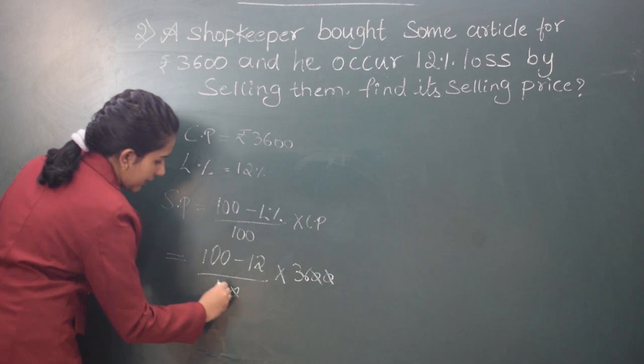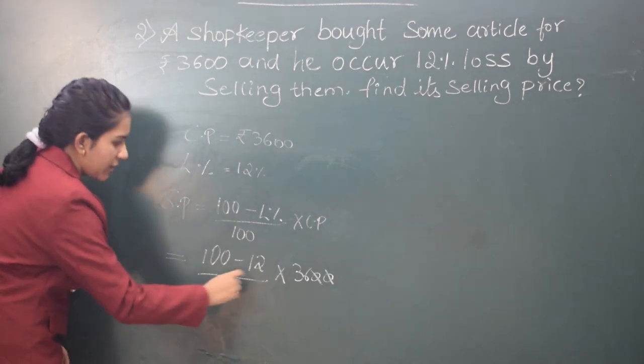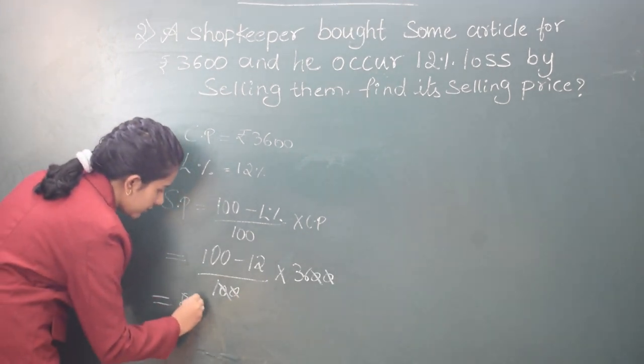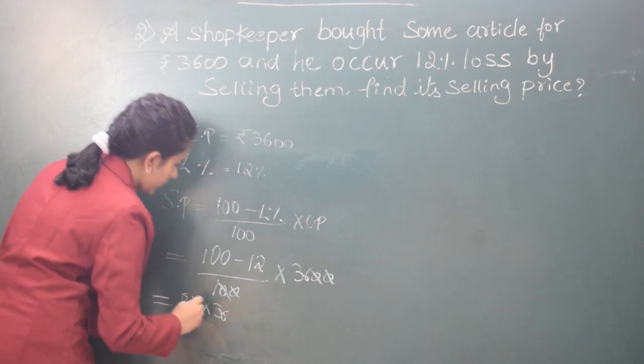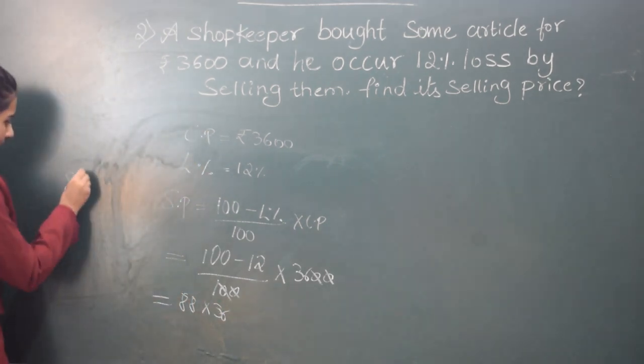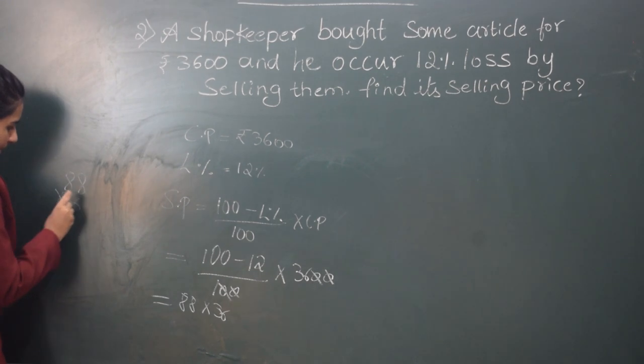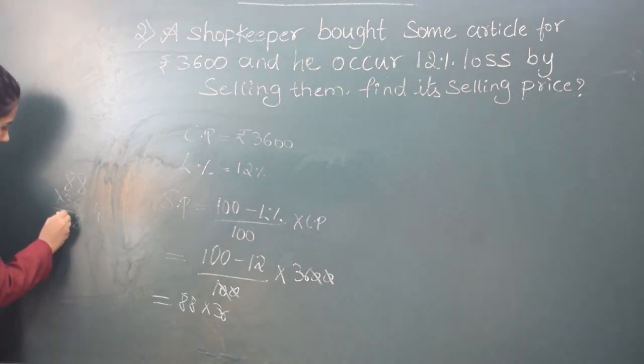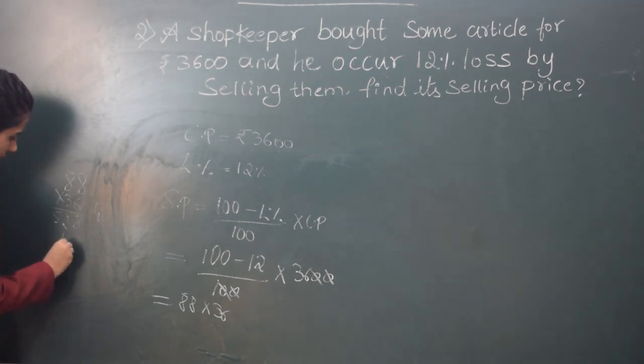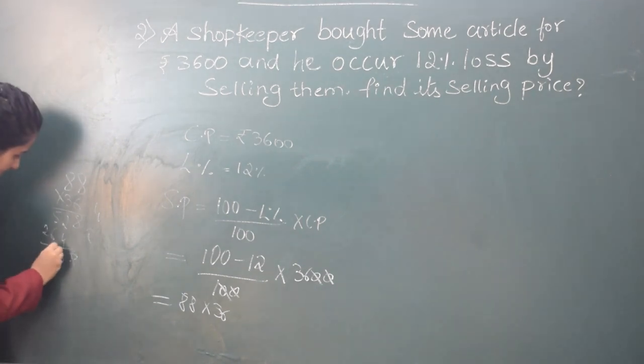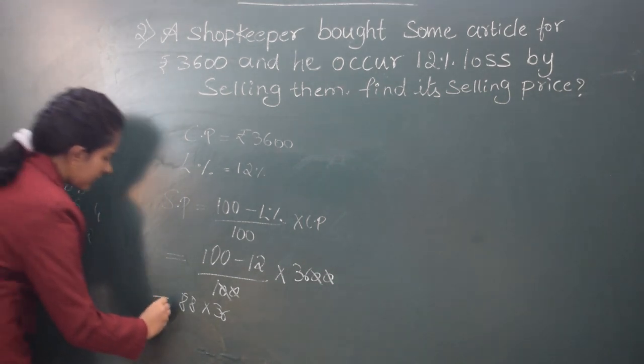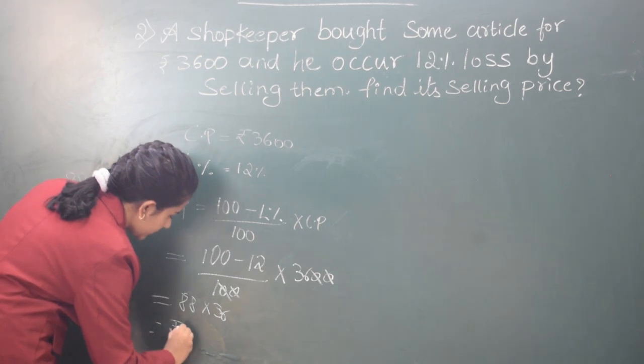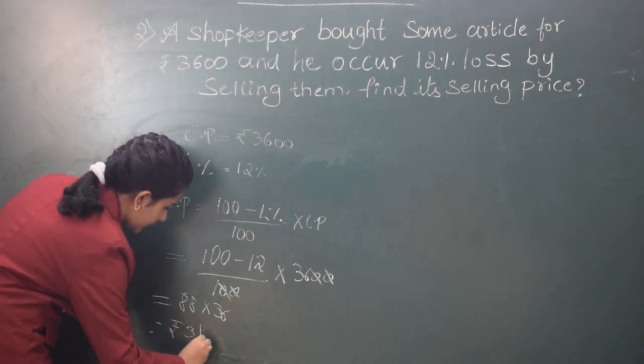So we can cancel two zeros and 100 minus 12 is 88 into 36. So the answer is Rs. 3168.